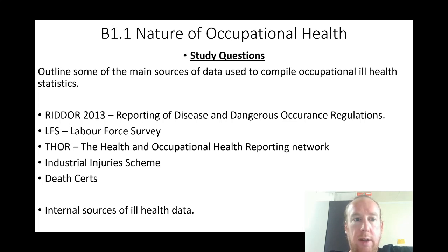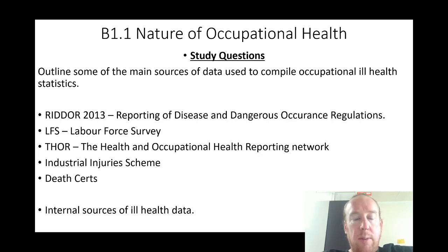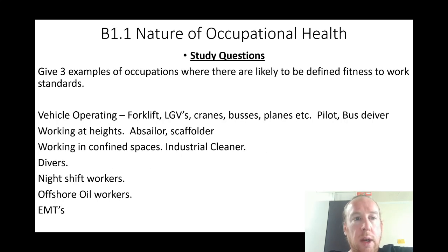Outline some of the main sources of data used to compile occupational ill health statistics: RIDDOR 2013 (Reporting of Injuries, Diseases and Dangerous Occurrences Regulations), LFS (Labour Force Survey), THOR (The Health and Occupational Reporting Network), industrial injury scheme, death certificates, and internal sources of ill health.